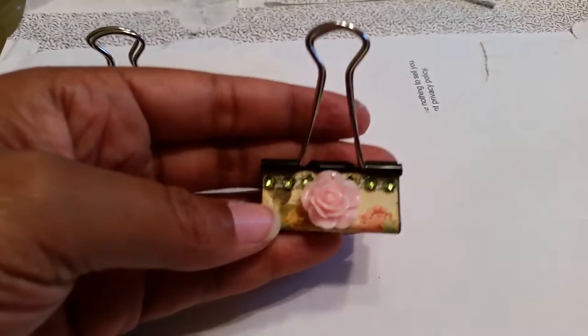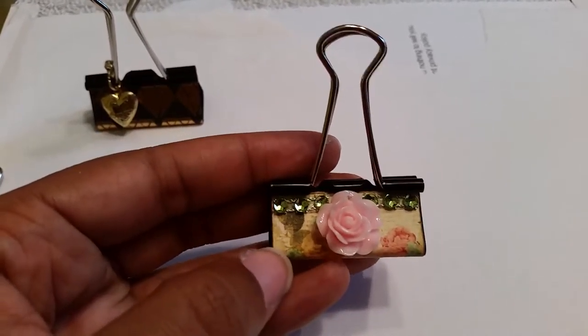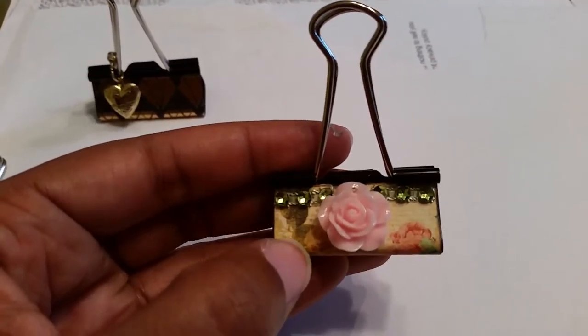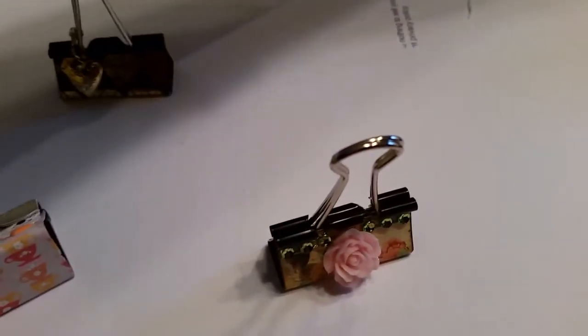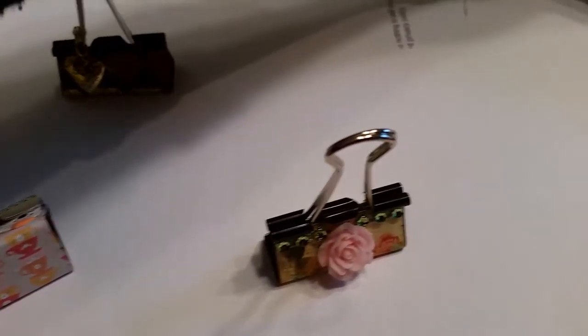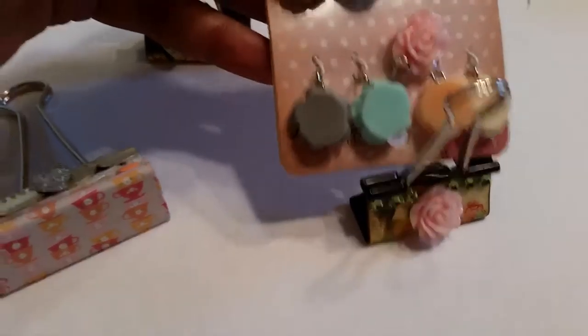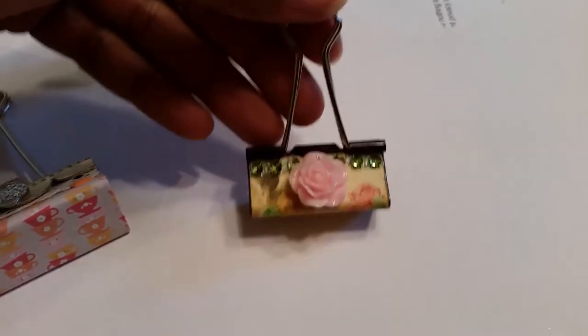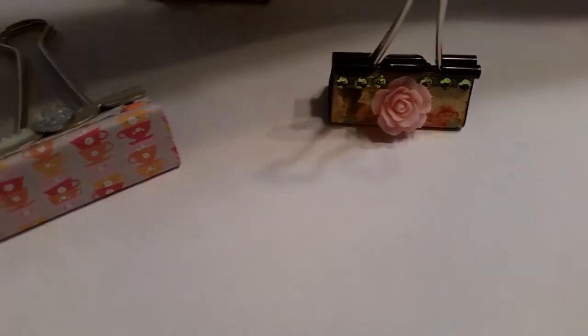The next one is this medium-sized binder clip, and I used the Prima coffee break paper here, some green bling from Michaels, and then a capuchon here. It was a charm - these charms here - and I took the ring off of it and added it to the binder clip. So that's the second one.